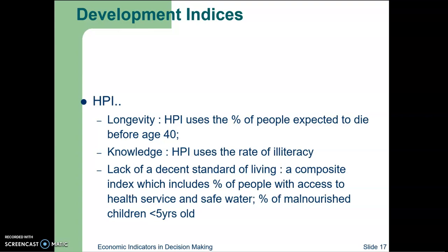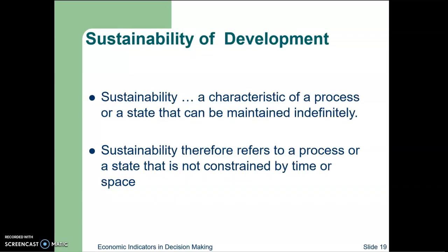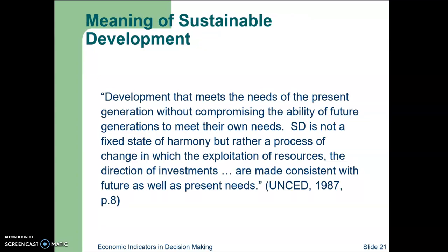What do we mean by sustainable development? Based on Seers' definition of development — being concerned with creating conditions for the realization of human personality — sustainability is a characteristic of a process or state that can be maintained indefinitely. Therefore, sustainable development refers to a process or state not constrained by time or space. It is development which meets the needs of the present generation without compromising the ability of future generations to meet their own needs.